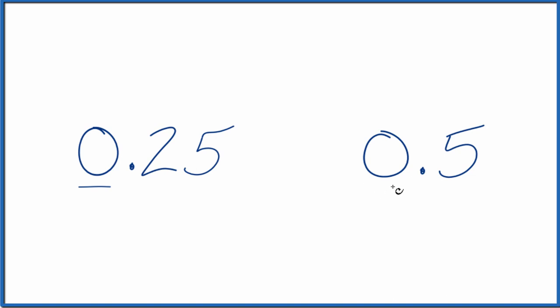So we compare the 0 there. That's the same. That doesn't help us. We go to the decimal point. After the decimal point, we have a 2, and then we have a 5. Since 5 is larger than 2, 0.5 is larger than 0.25. It's greater than 0.25.